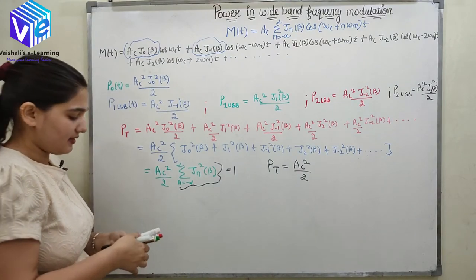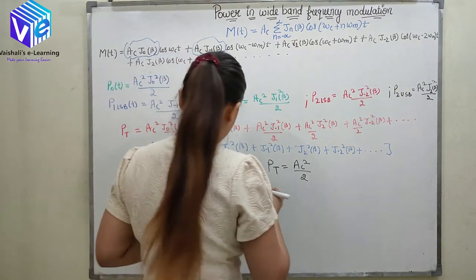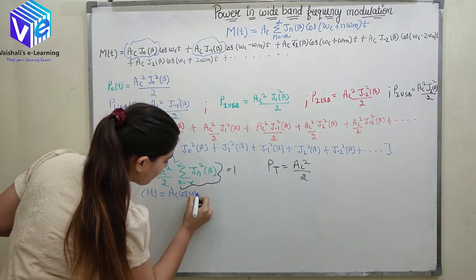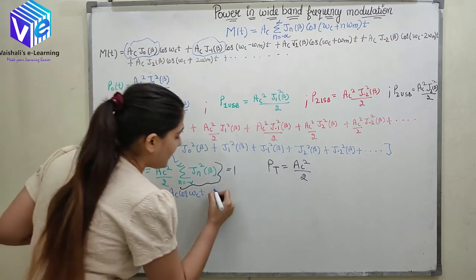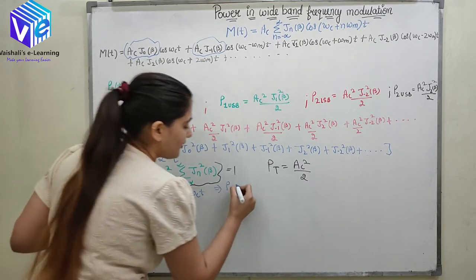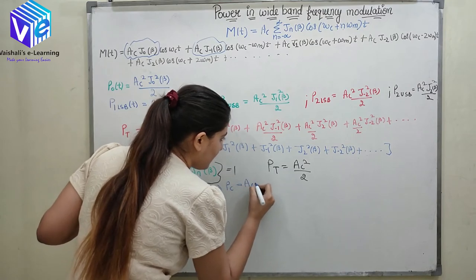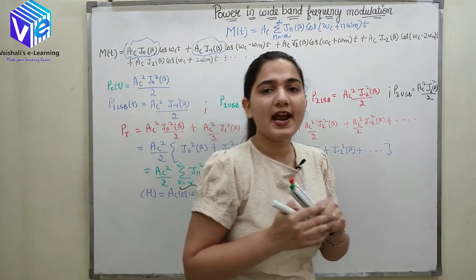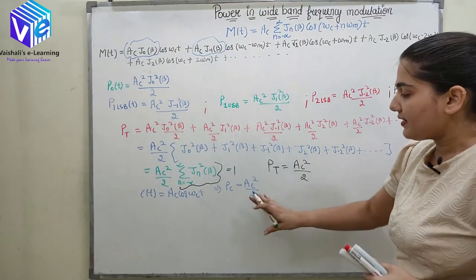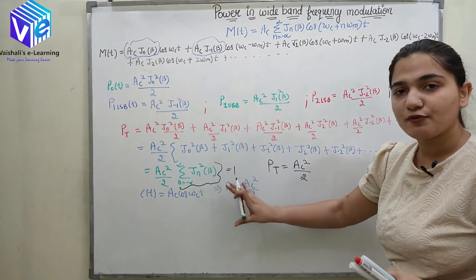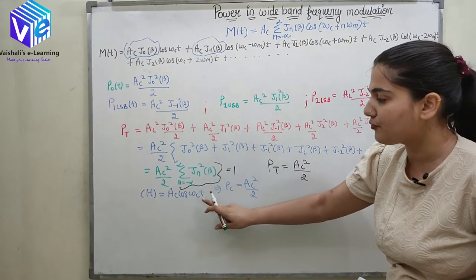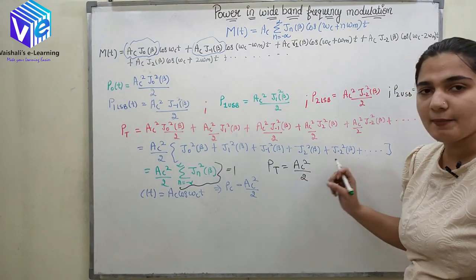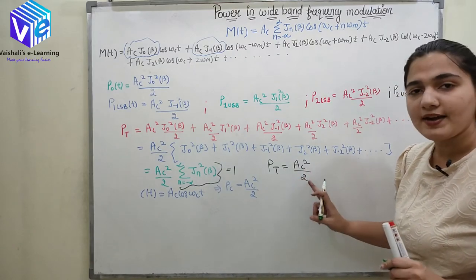Now, the carrier signal C(T) = AC·cos(ωC·T), and the power of the carrier is AC²/2. From here we deduce that in FM we require the same power as before modulation — before modulation the power was AC²/2, and after modulation the power is again AC²/2.